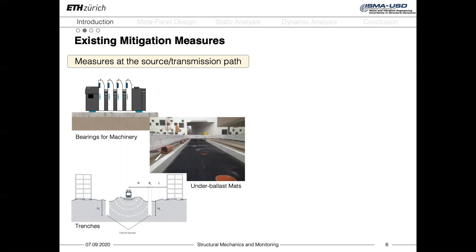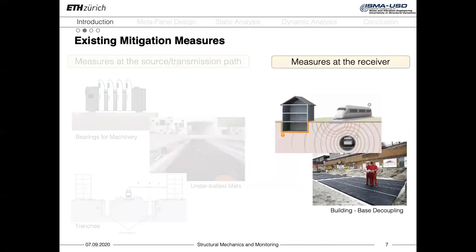On the other hand, other types of measures act along the transmission path, like trenches dug between the source of vibrations and the neighboring buildings. An alternative consists in adopting measures that act directly on the receiver, like elastomeric materials used to decouple the upper structure from the ground.